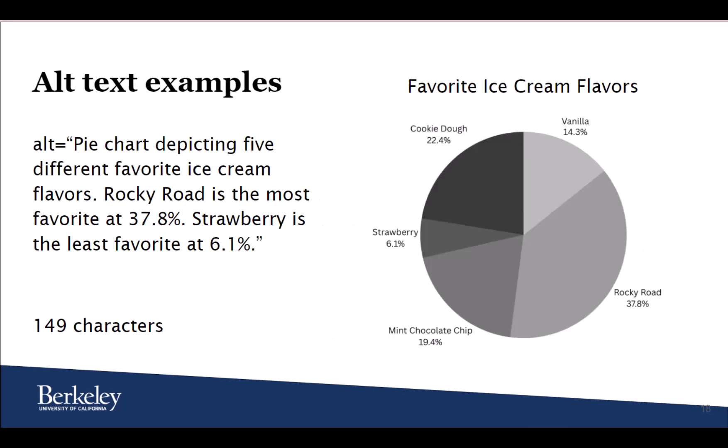Here is an example of what your alt text might look like for a pie chart showing favorite ice cream flavors. The alt text reads: pie chart depicting five different favorite ice cream flavors. Rocky Road is the most favorite at 37.8%. Strawberry is the least favorite at 6.1%. This alt text has 149 characters and answers some of the main questions that might need to be answered with this chart.